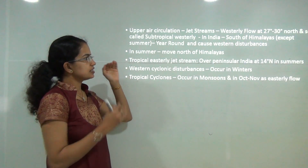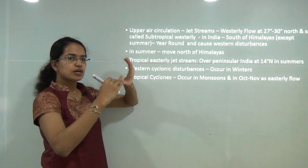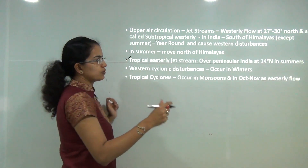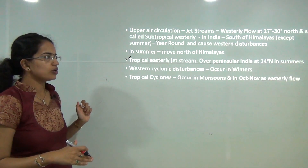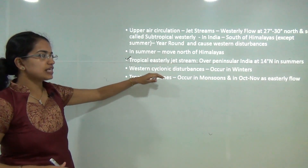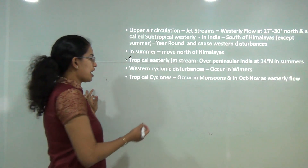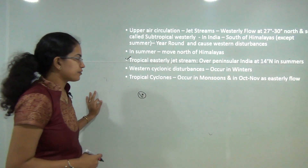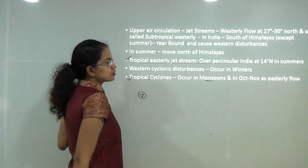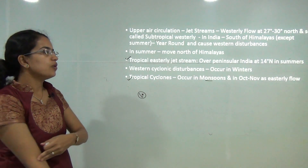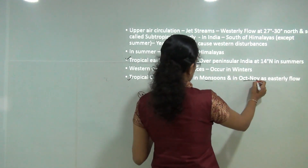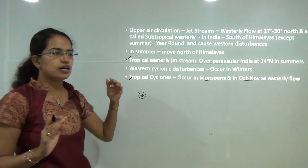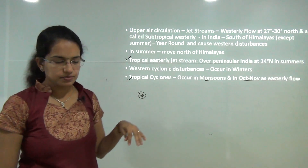In summer, the westerly jet stream moves north of the Himalayas. The easterly jet stream is visible over the peninsula at nearly 14 degrees north during summer. There are also cyclonic disturbances in winter — low pressure zones creating cyclonic depressions. Tropical cyclones occur during the monsoon months, and due to the easterly flow, also in October and November. All these upper air phenomena affect climatic conditions in specific areas.